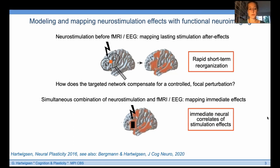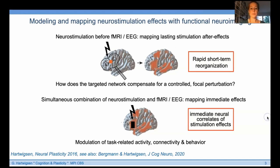The second approach is the simultaneous combination of neurostimulation and fMRI or EEG to map the immediate neural correlates of stimulation effects. Illustrated here is the simultaneous combination of TDCS with fMRI, which is methodologically relatively easy. Both approaches provide the advantage that we can modulate task-related activity, relate this to changes in task-related interactions or connectivity, and changes at the behavioral level.